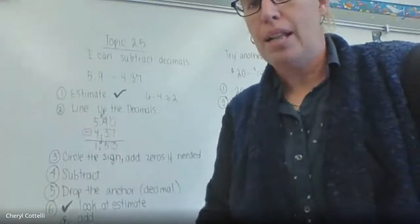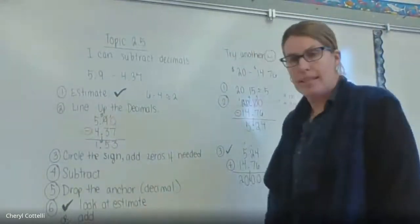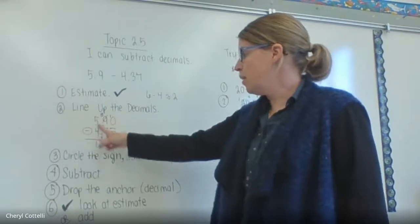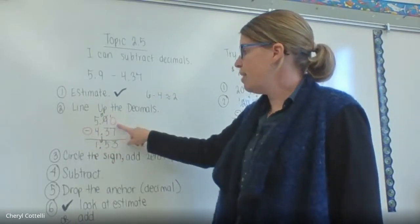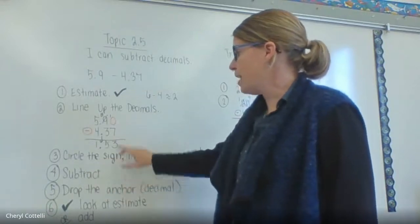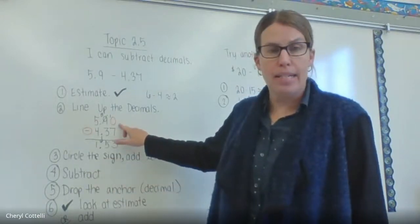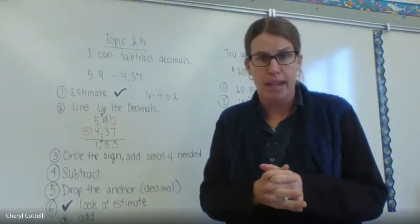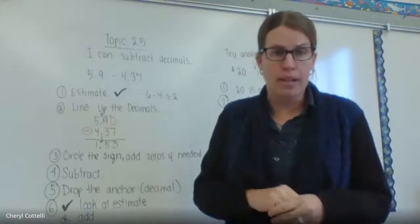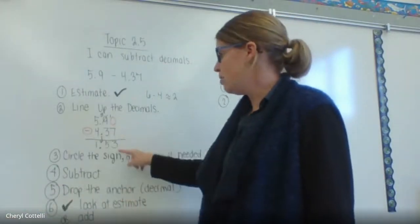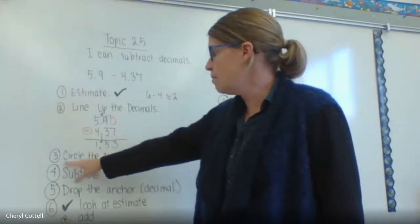Then what we're going to do is step two: line up the decimals. Remember the Bubble Guppies song, so we put the ones in the ones place, the tenths in the tenths. There's nothing up here, so that's actually part of step three. We can add a zero just to line everything up, just like when we were comparing decimals. We can add as many zeros as we want after the decimal.